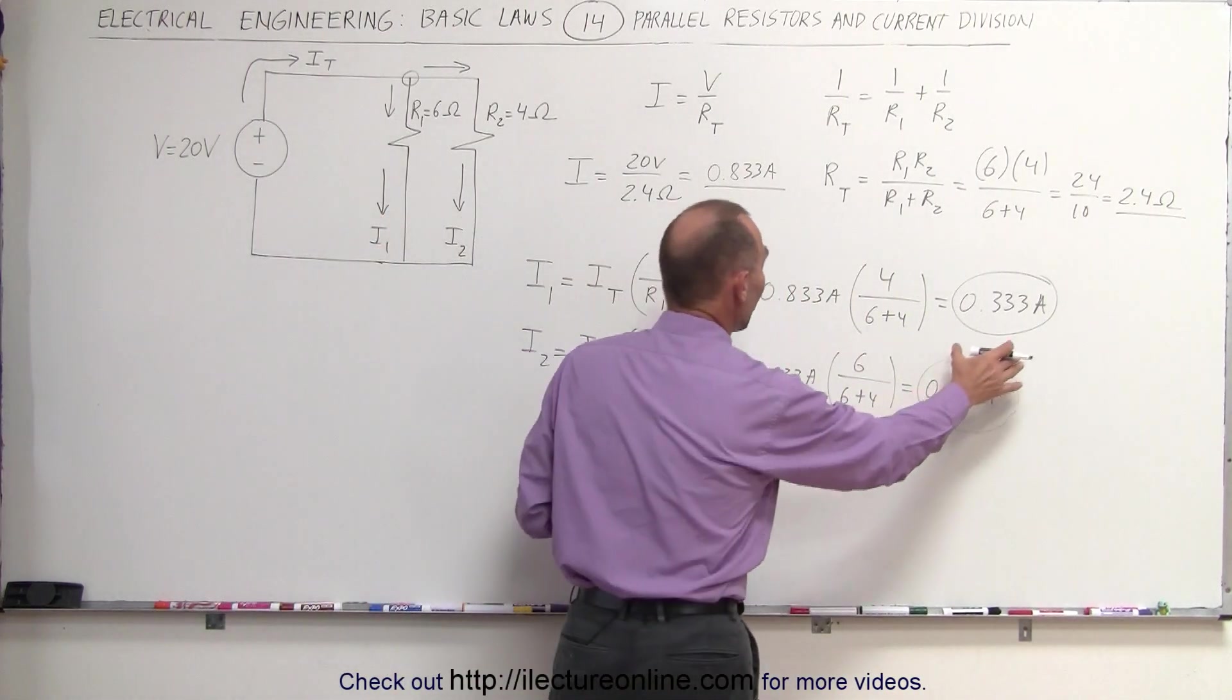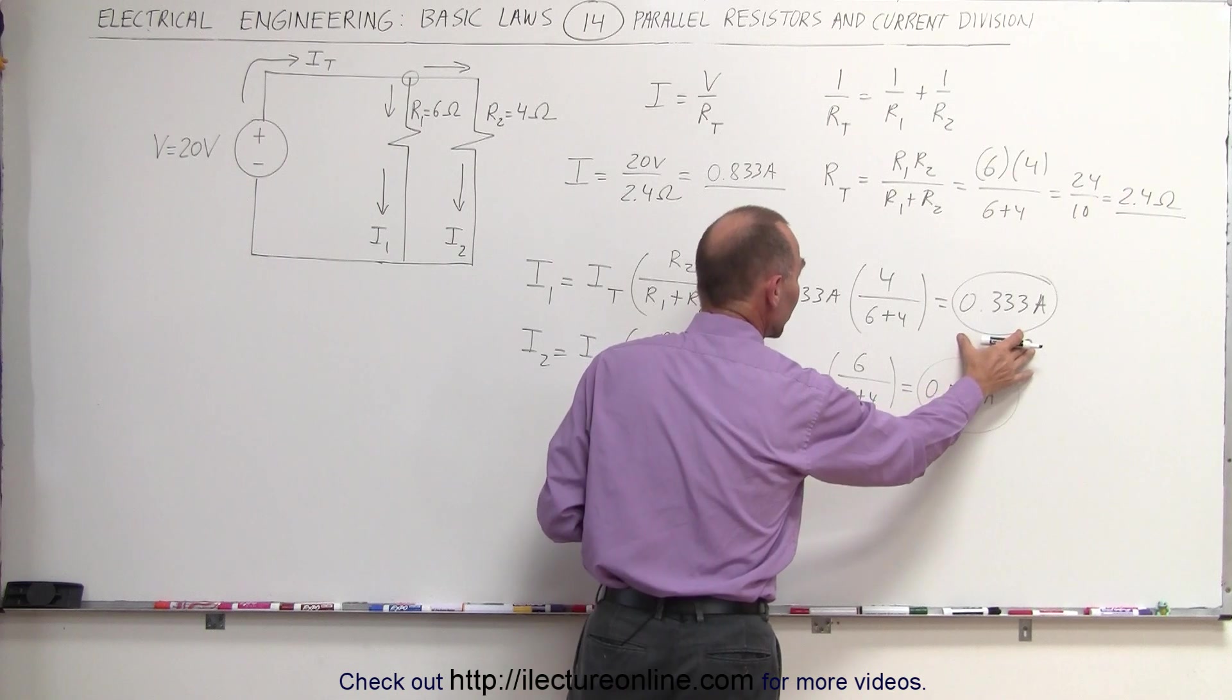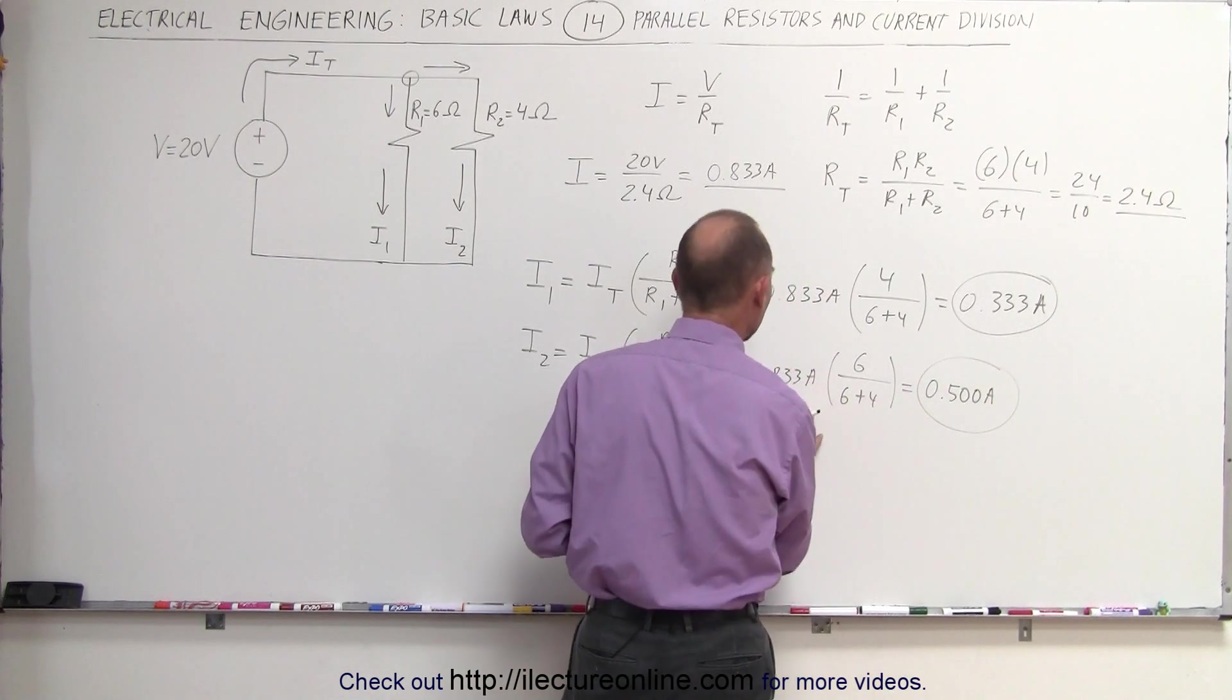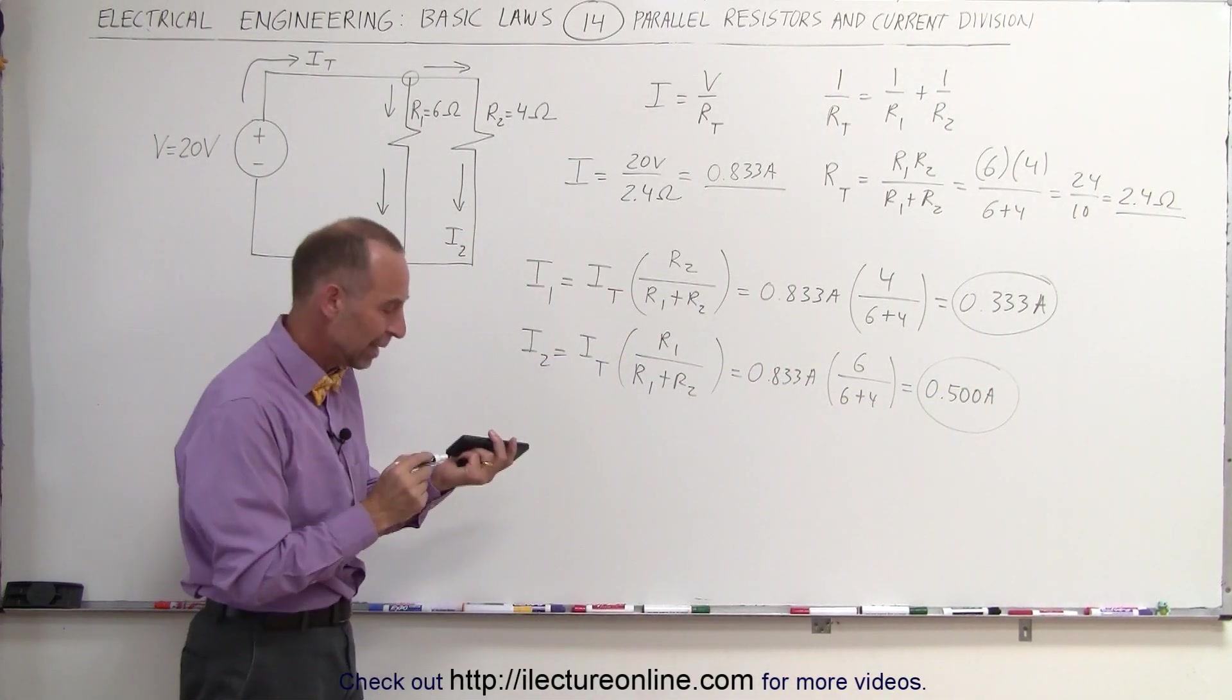Together, they should add up to 0.833 amps. 0.333 plus 0.5 indeed does add up to 0.833 amps.